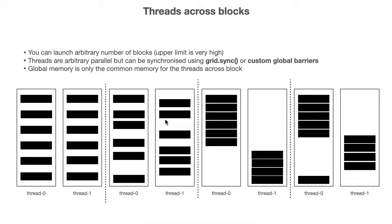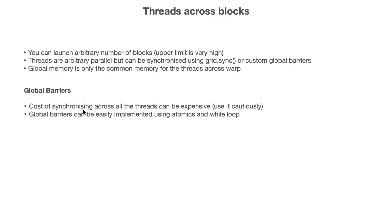Now let's move to threads across the block. You can launch an arbitrary number of blocks — the upper limit is usually very high. Threads are arbitrarily parallel but can be synchronized using grid.sync or a custom global barrier. Global memory is the only common memory for threads across blocks. Usually the cost of synchronizing across all threads can be very expensive, so we need to use the global barrier very cautiously. One can implement the global barrier easily using atomics and a while loop.